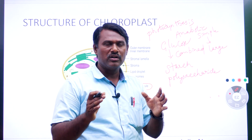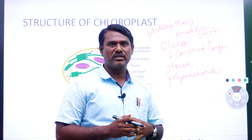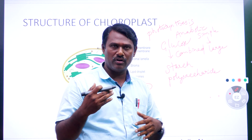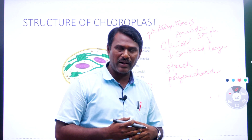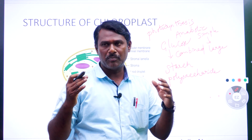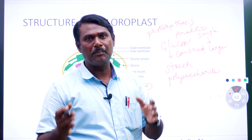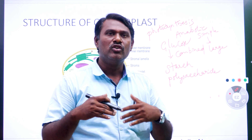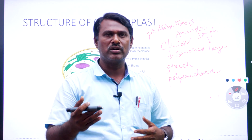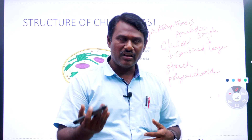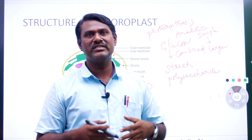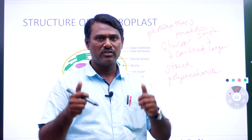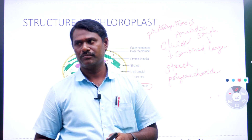So this is about the structure of chloroplast. We have finished about the factors required for photosynthesis, the TS of leaf, and the structure of chloroplast. In the next class we are going to see about the internal mechanism of photosynthesis and nutrition in human beings. Thank you for attending the class.